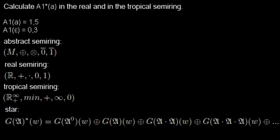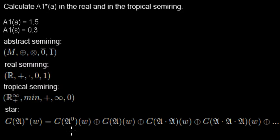This calculation states that we have to do an infinite number of additions — though it's not always going to be infinity. So let's have a look. First we need the weight of the word zero times in this automaton.